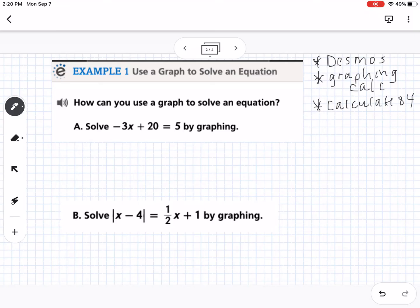So, example 1, part A, we're solving this by graphing. We could solve this by just algebra, I know you could do that, you could subtract 20 from both sides, divide by negative 3, and you're good to go. But it wants you to solve it by graphing. What I want you to start realizing is that you can split up an equation into two parts. You can write this as y equals negative 3x plus 20, and you can write this as y equals 5.